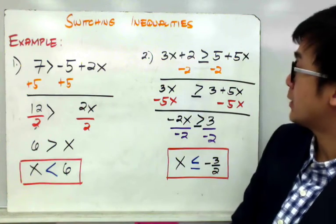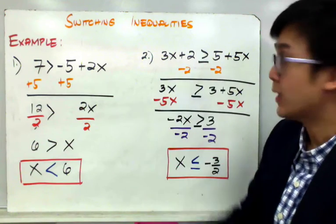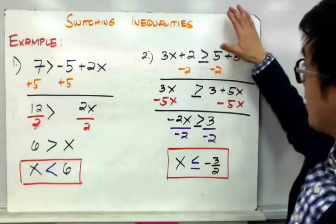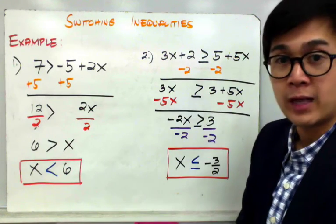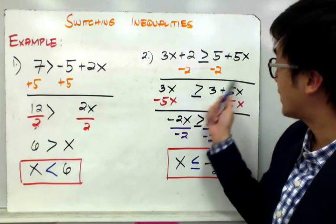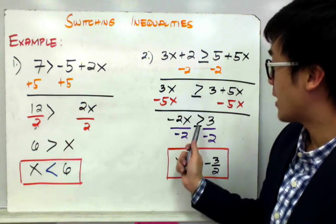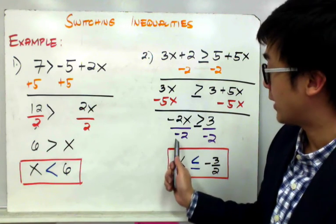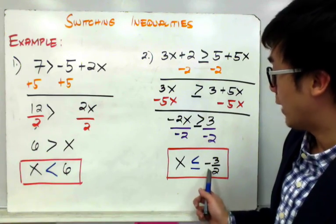For the next example, I have 3x plus 2 greater than or equal to 5 plus 5x, with x terms on both sides. To get x by itself on the left, I subtract 2 on both sides giving 3x greater than or equal to 3 plus 5x. Then I subtract 5x on both sides, giving negative 2x greater than or equal to 3. Dividing both sides by negative 2 and switching the symbol, the final answer is x less than or equal to negative 3 over 2.